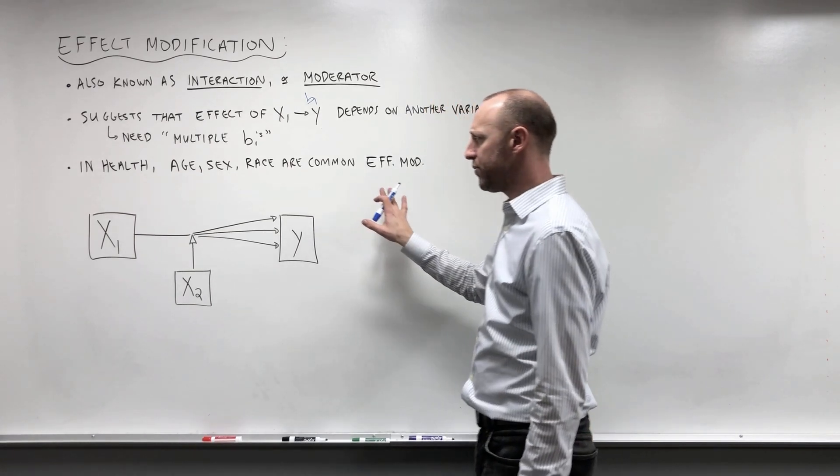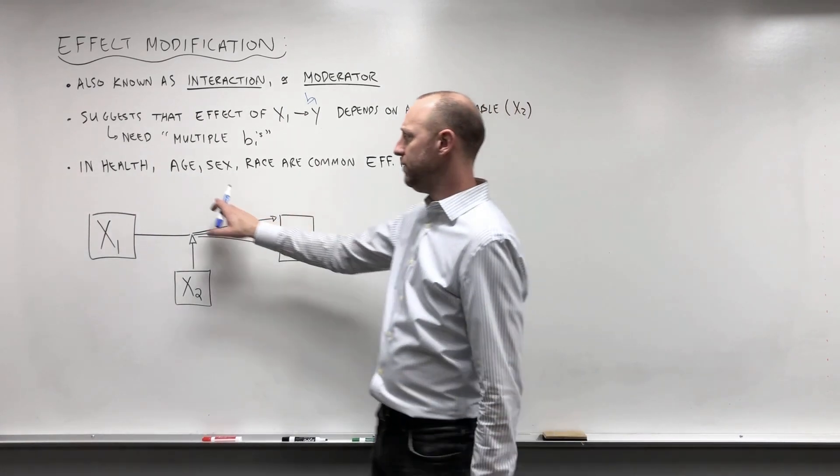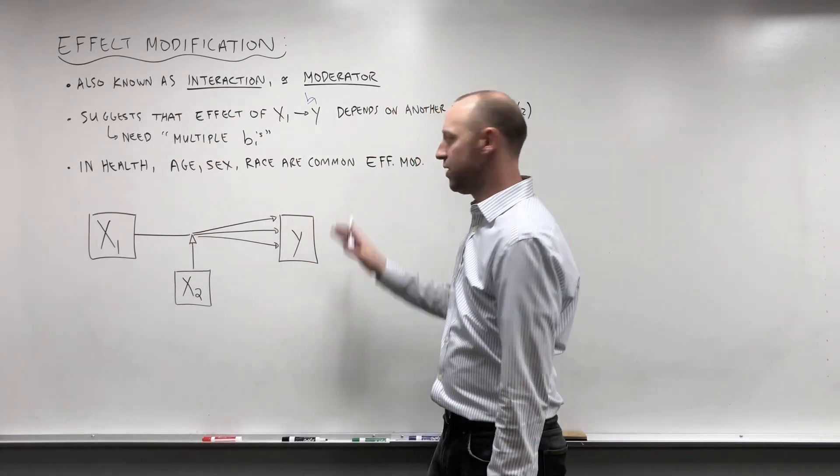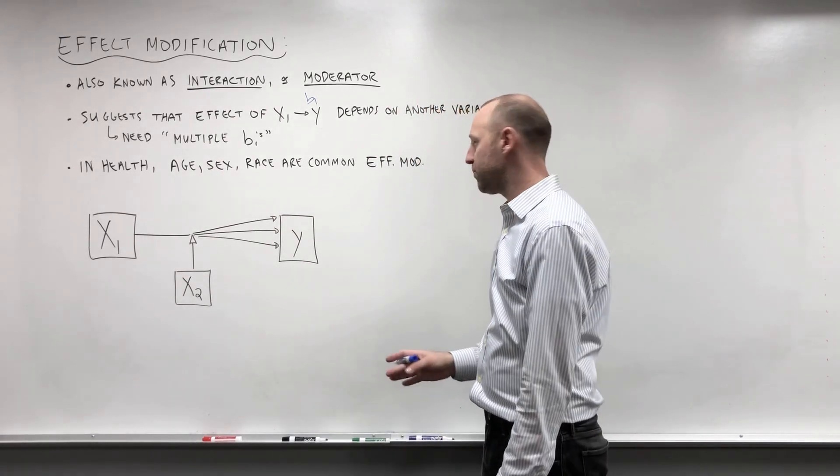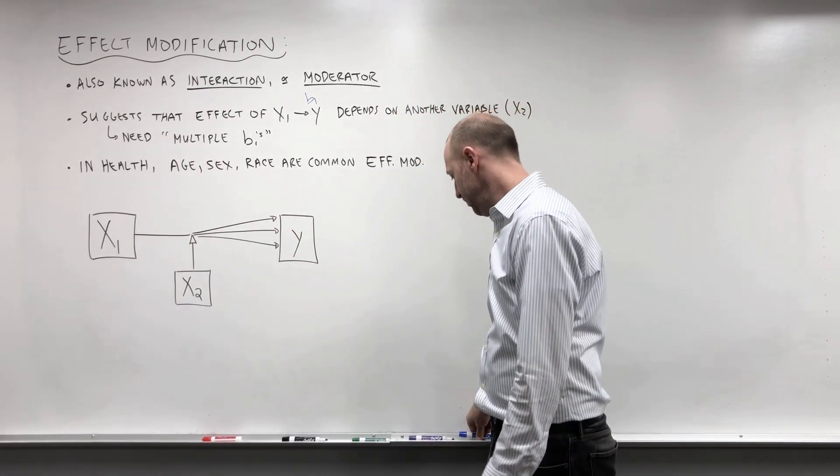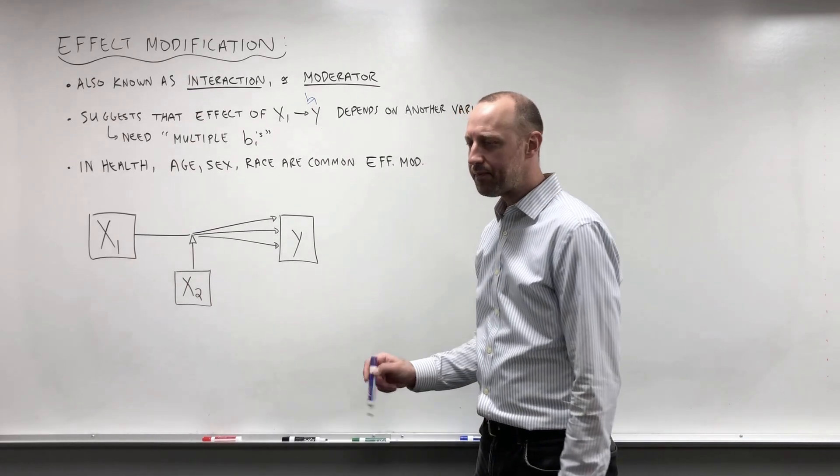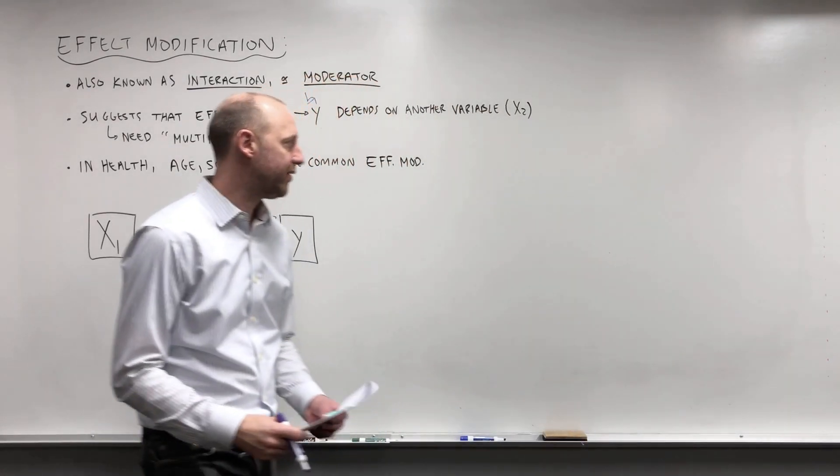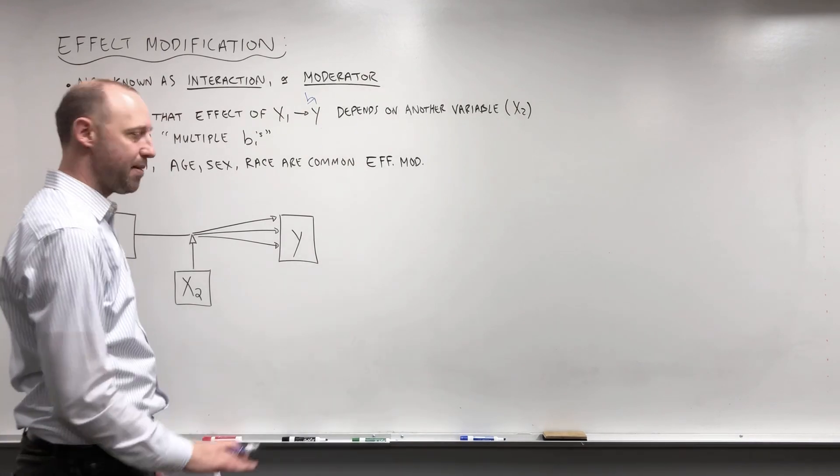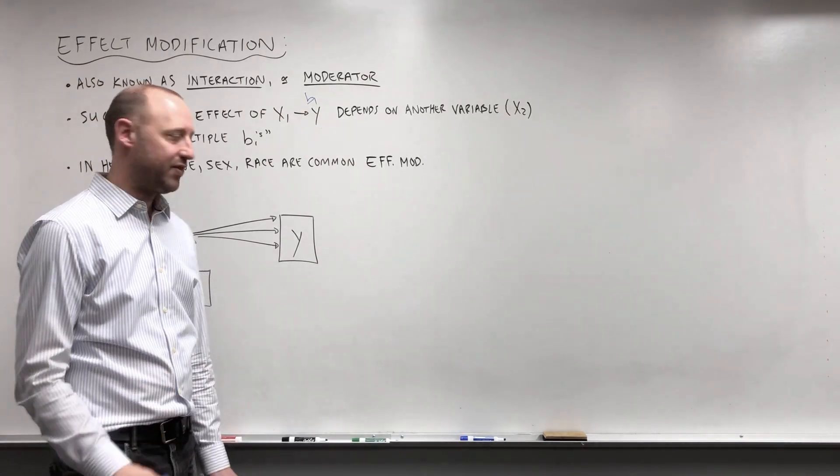So in health research quite often age, sex, and race are quite common to be effect modifiers or at least ones worth exploring. In a moment I'll write down some of the criteria. I just want to think through some examples of what an effect modification looks like.